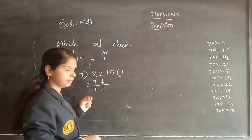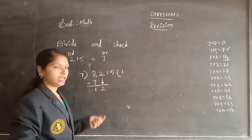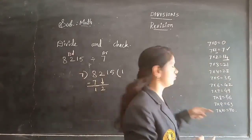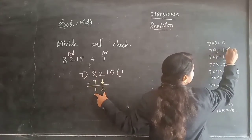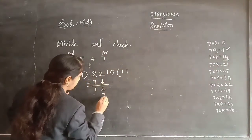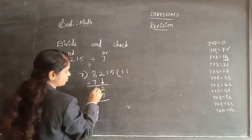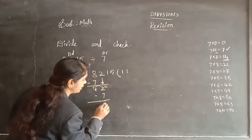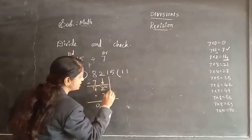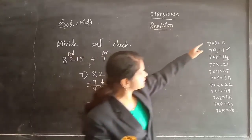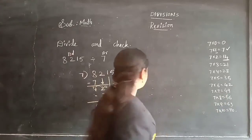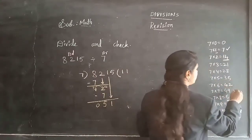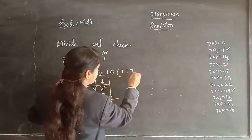12 is not in the 7 table — the bigger is 14, so take the one before: 7×1=7. So again 7×1=7. Now 12 minus 7: 2 minus 7 is not possible, so borrow — 12 minus 7 = 5. Write 5 here and 0 carry. Bring down the next digit 1, making 51. Is 51 in the 7 table? No — the bigger is 56, so take the one before: 7×7=49.